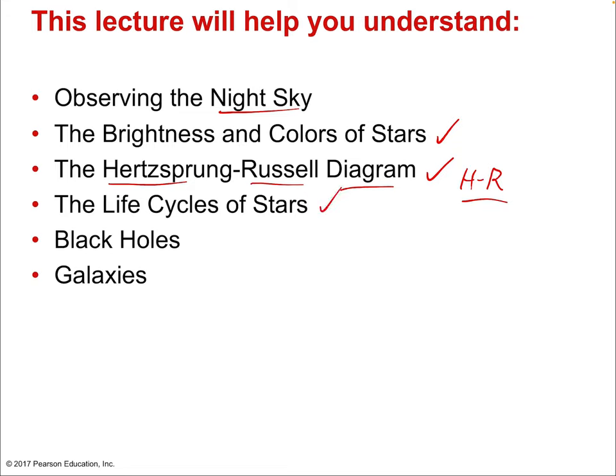Then the life cycles of stars — there's more than one life cycle a star can take. One dramatic type of leftover remnant is the black hole, which is what the largest stars become when they die. We'll also discuss other types of interesting remnants that stars leave behind. Finally, galaxies: groupings of stars, but also interesting in their own right — their features, physics, and life cycles.